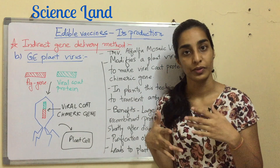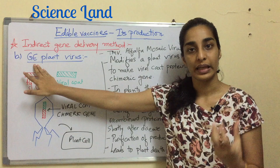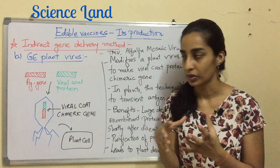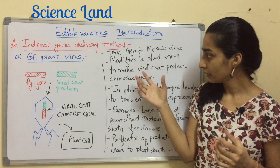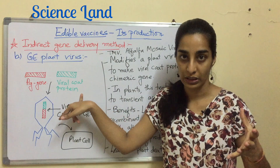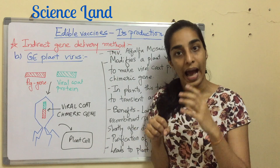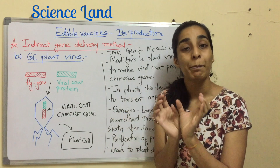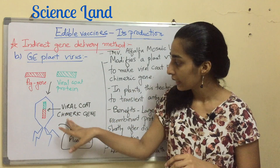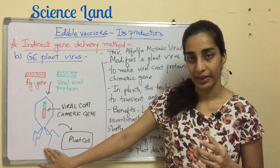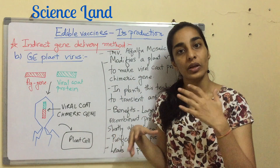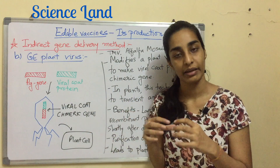The second indirect method uses a genetically engineered plant virus. The tomato mosaic virus and alfalfa mosaic virus are commonly used as vectors. The method involves modification of a plant virus to make a viral coat protein chimeric gene — combining the antigen gene with the viral coat protein gene and reinserting it into the virus. This virus then infects the plant, and as the viral genome replicates, the antigen gene also replicates, accumulating in the plant cell.